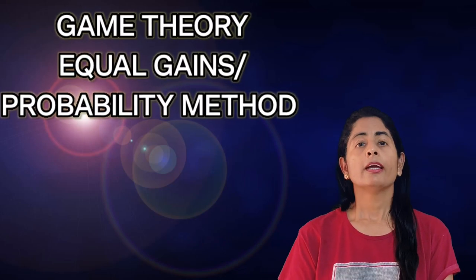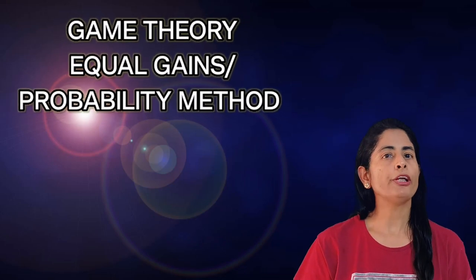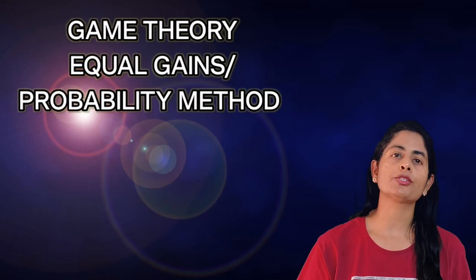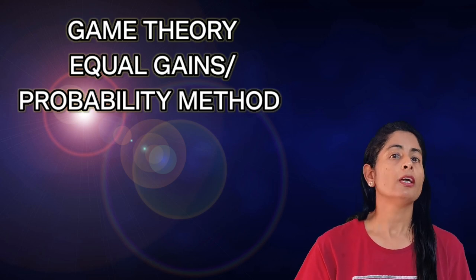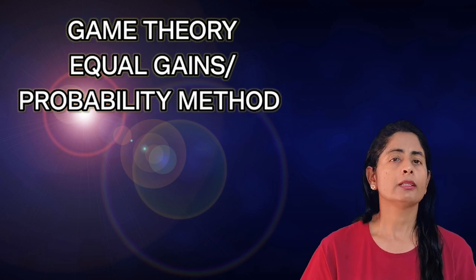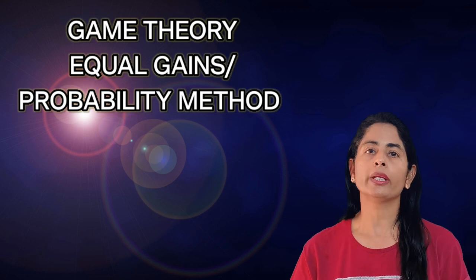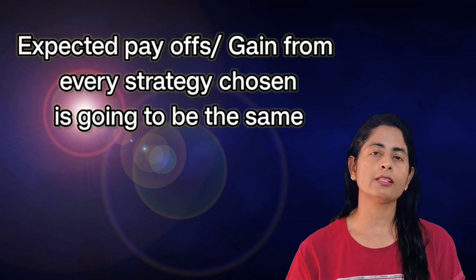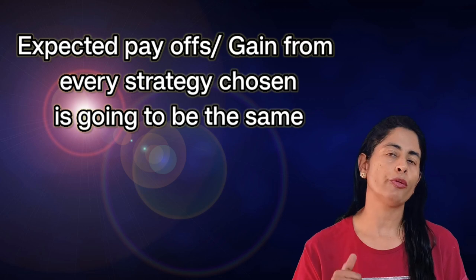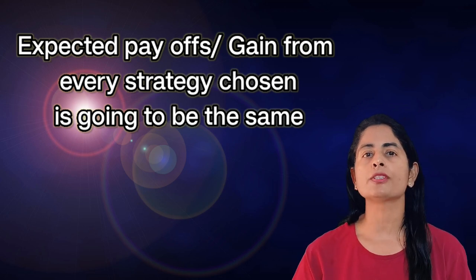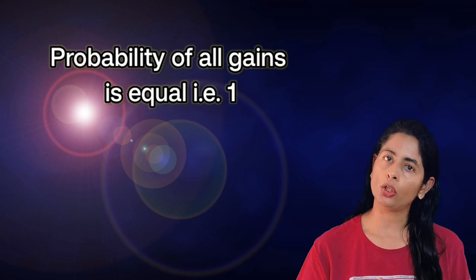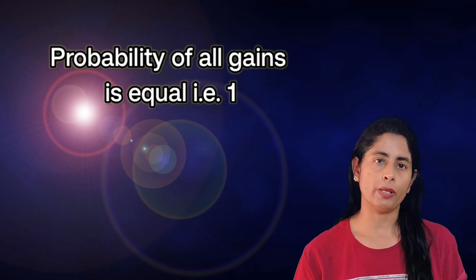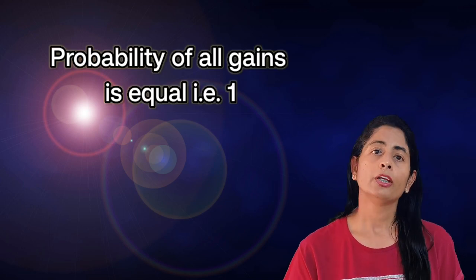Hello students. In the series of videos related to game theory, the next topic we are going to cover today is the probability method. This method is also known as the equal gains method, as it presumes that all the gains players will get from different alternatives will be equal. This method is also called the equal gains method as well as the probability method.